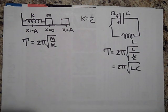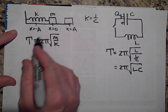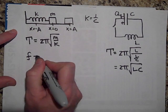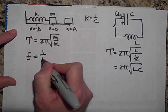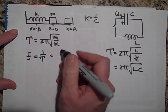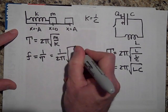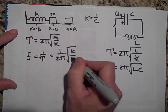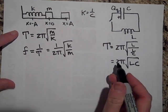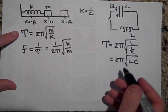We can talk about the frequency. It's going to be 1 over the period. So the frequency of this is going to be 1 over the period, or it's going to be 1 over 2π times the square root of k over m. And the frequency of this is going to be...